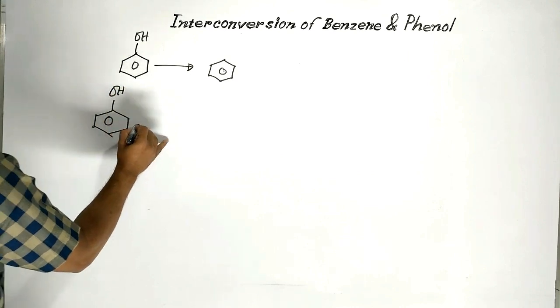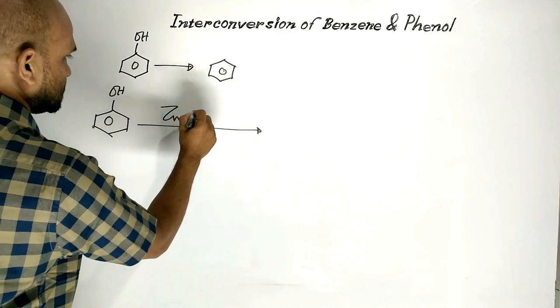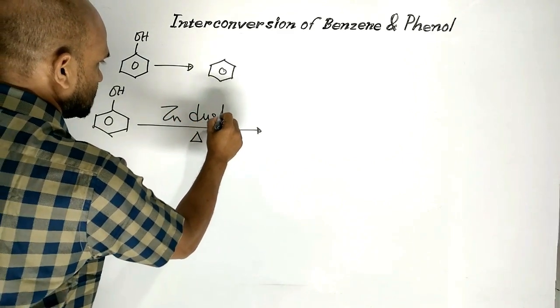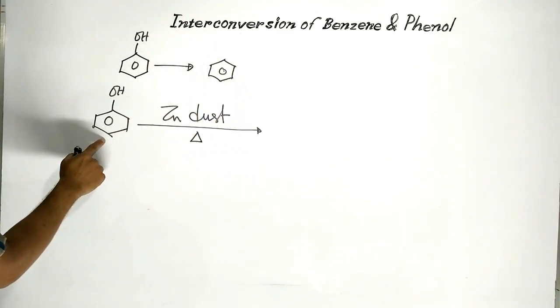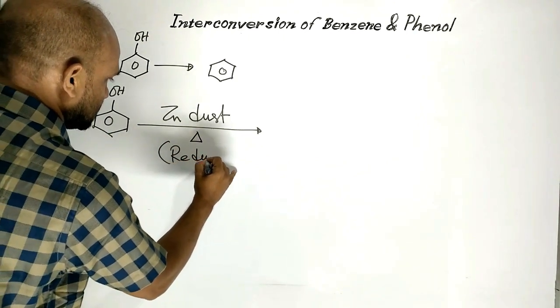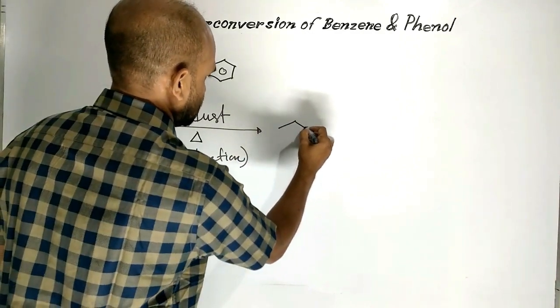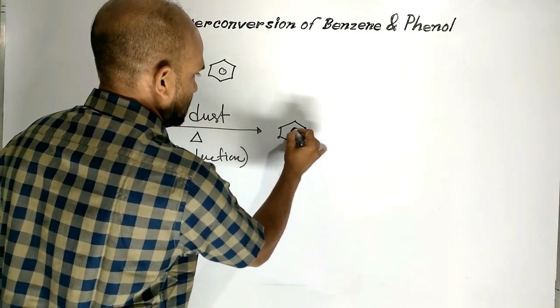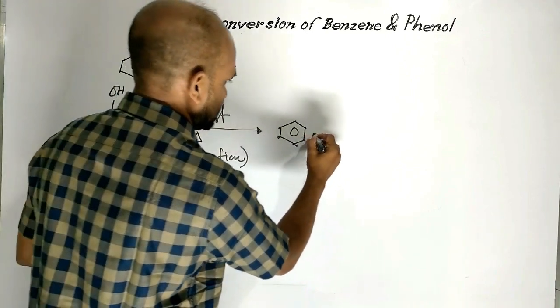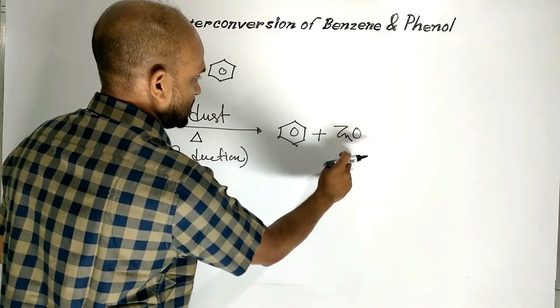Phenol is heated in presence of zinc dust. Then phenol undergoes reduction and as a result, benzene is formed. Here by-product is zinc oxide.